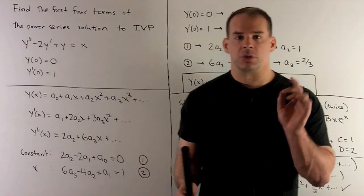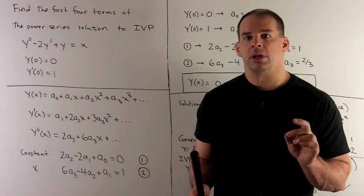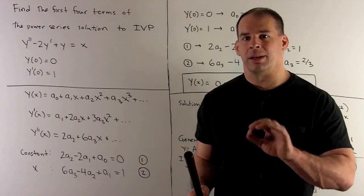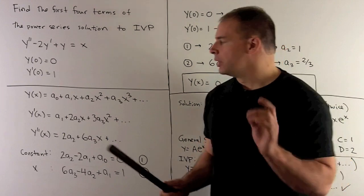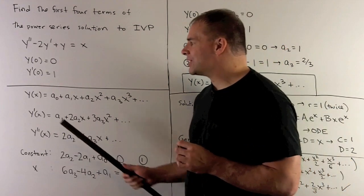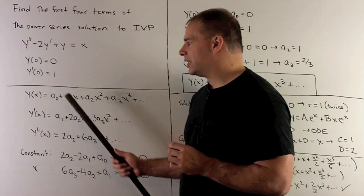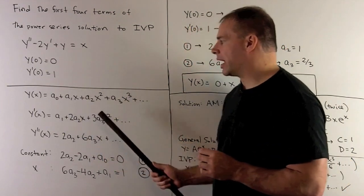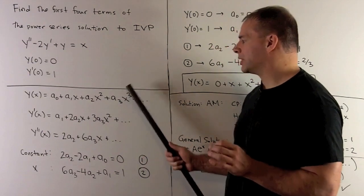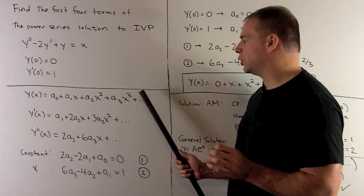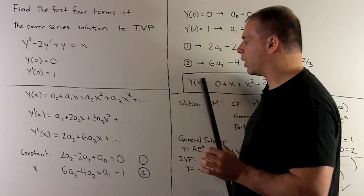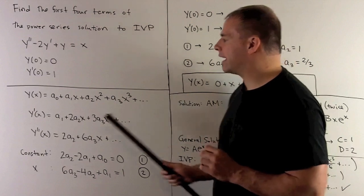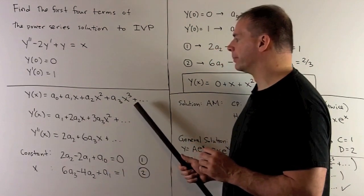To proceed, we assume that we have a solution in power series form, so we write y of x equals a zero plus a one x plus a two x squared plus a three x cubed and so on. Here we only care about the first four terms.